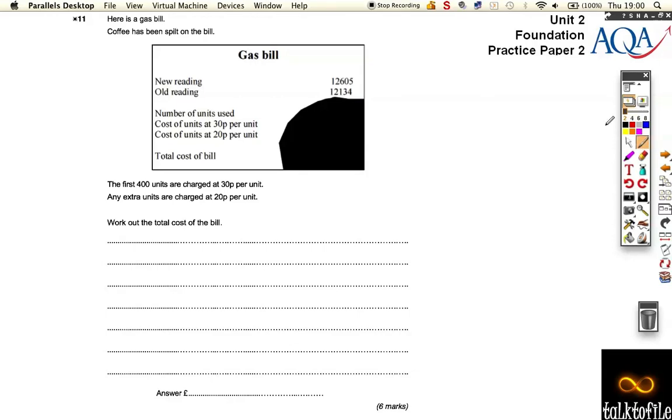Okay, question number 11. This is a gas bill with a spillage on it, and you get charged a certain amount for a certain number of units, and then some amount for the next units.